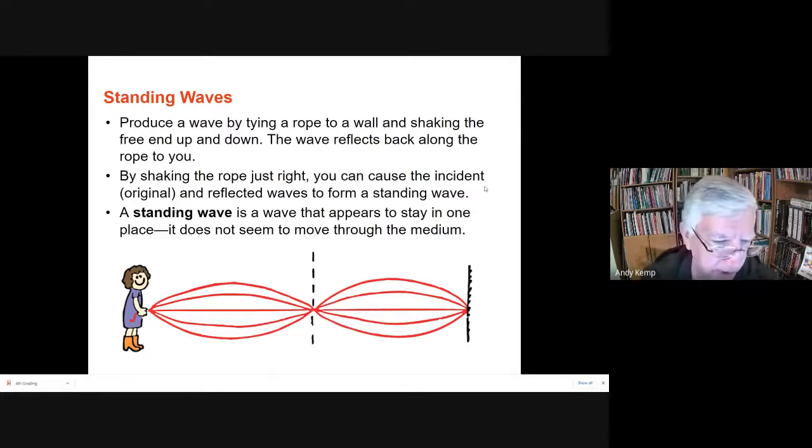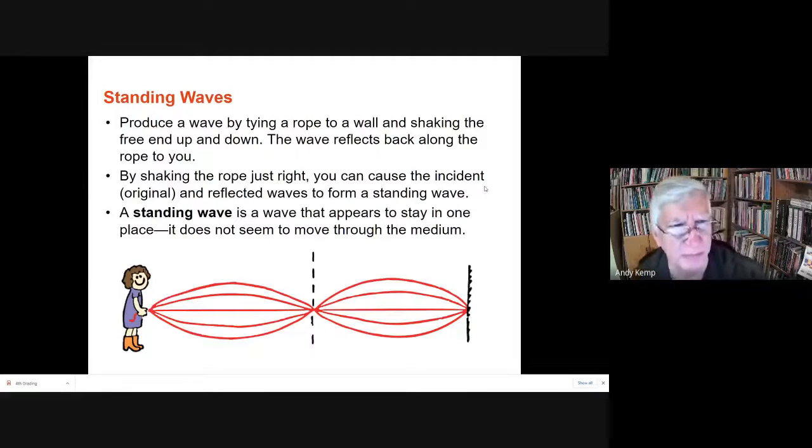You can see this for yourself if you had a rope and you could tie it up to a wall somewhere, and if you shake it just right, you can make it look like a wave with fuzzy inner parts. There's a place right in the middle where the rope will appear not even to move.